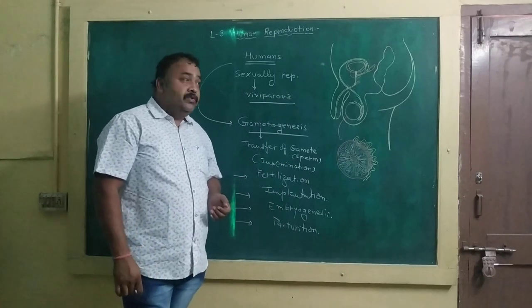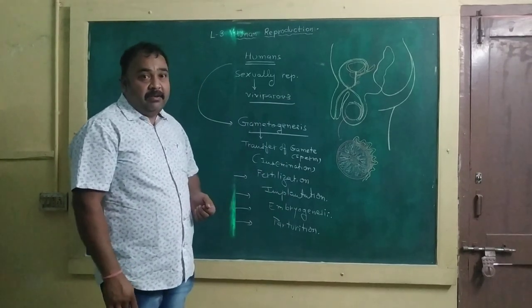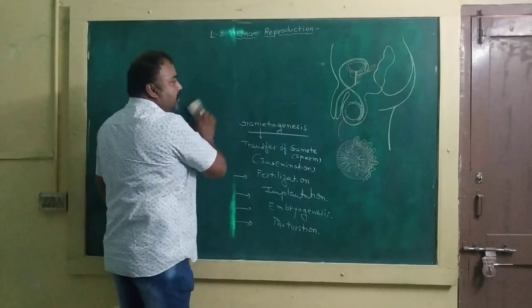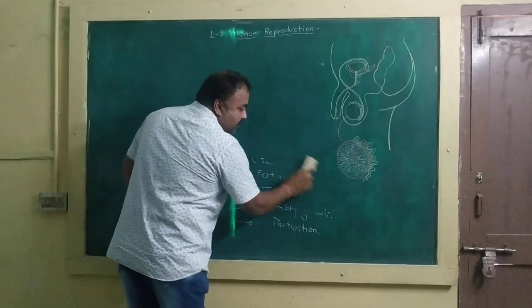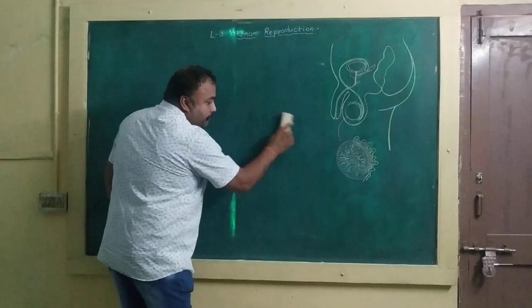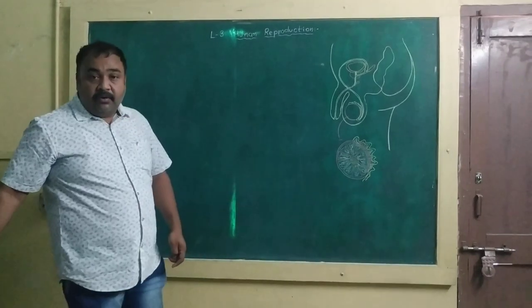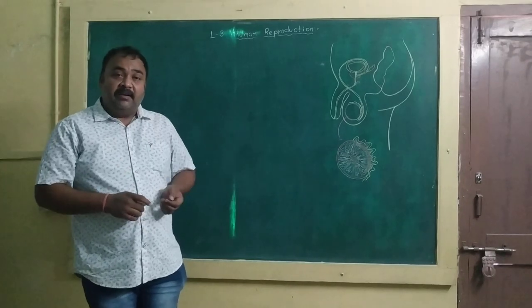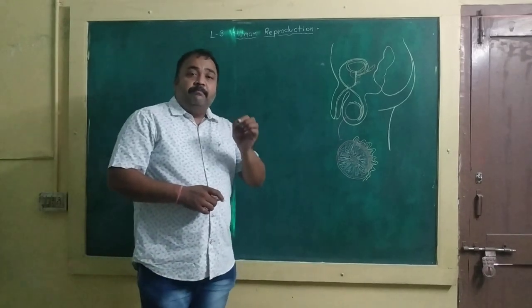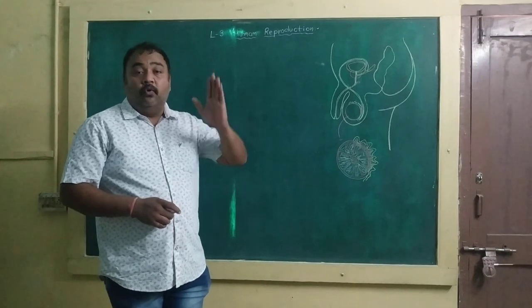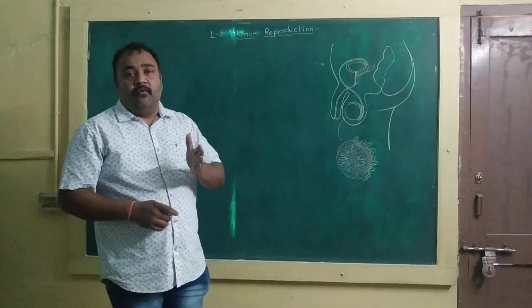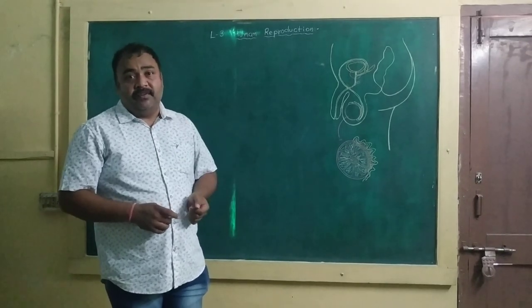These are the steps involved in human sexual reproduction. We know that humans are unisexual, meaning male and female are different. During puberty we observe different kinds of characteristic changes. Note that sperm production takes place in older men also, but in females the production of ova stops around the age of 50.